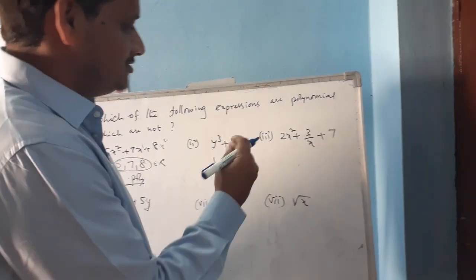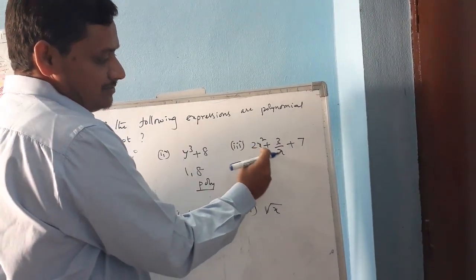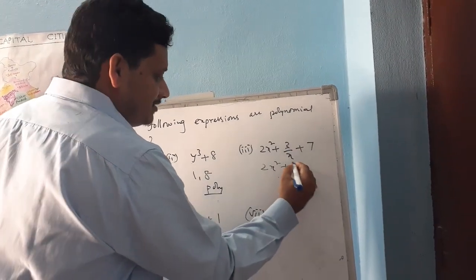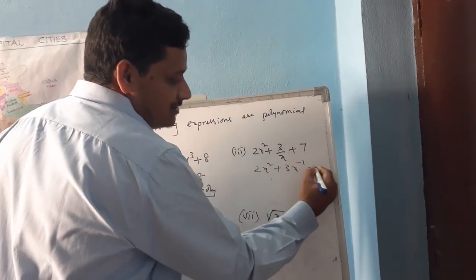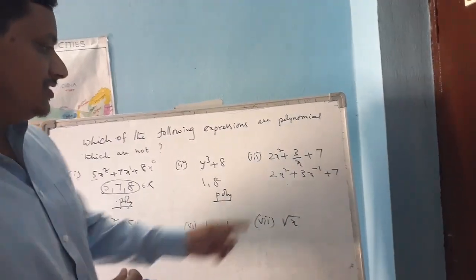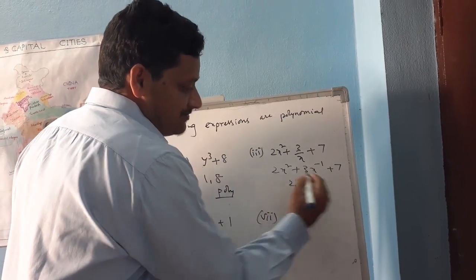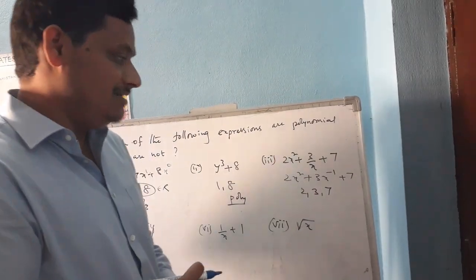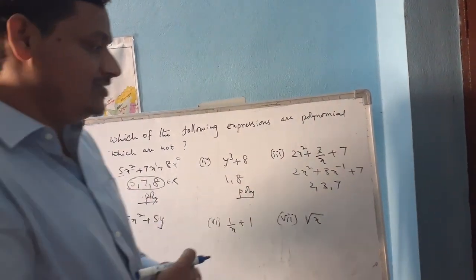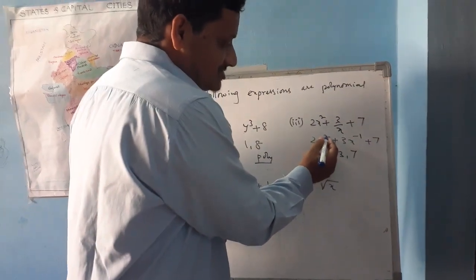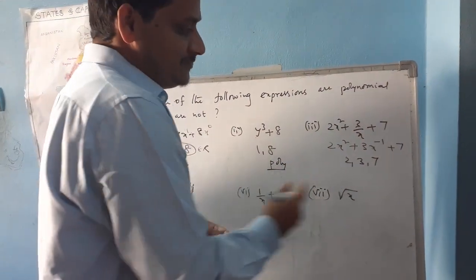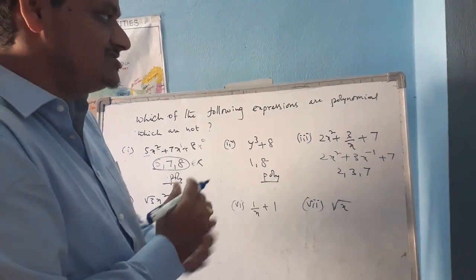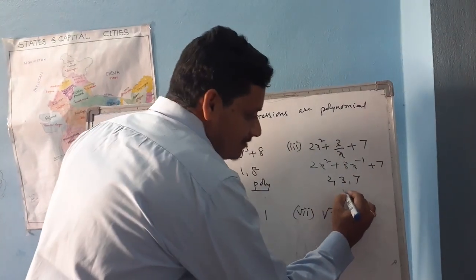For the third expression, (3/2)x² + 3/x + 7: the term 3/x can be written as x to the power of −1. The coefficients 2, 3, and 7 are real numbers. However, the power of x in the term 3/x is −1, which is a negative number. This fails the polynomial condition, so it is not a polynomial.